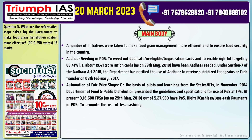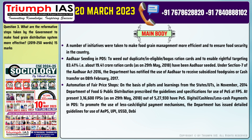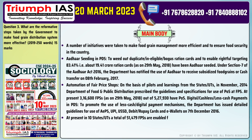Digital and cashless payments in PDS: To promote the use of less-cash digital payment mechanisms, the Department has issued detailed guidelines for use of AEPS, UPI, USSD, debit and RuPay cards, and e-wallets on 7th December 2016. Point 4: At present in 10 states and UTs, a total of 51,479 FPSs are enabled for digital payments.